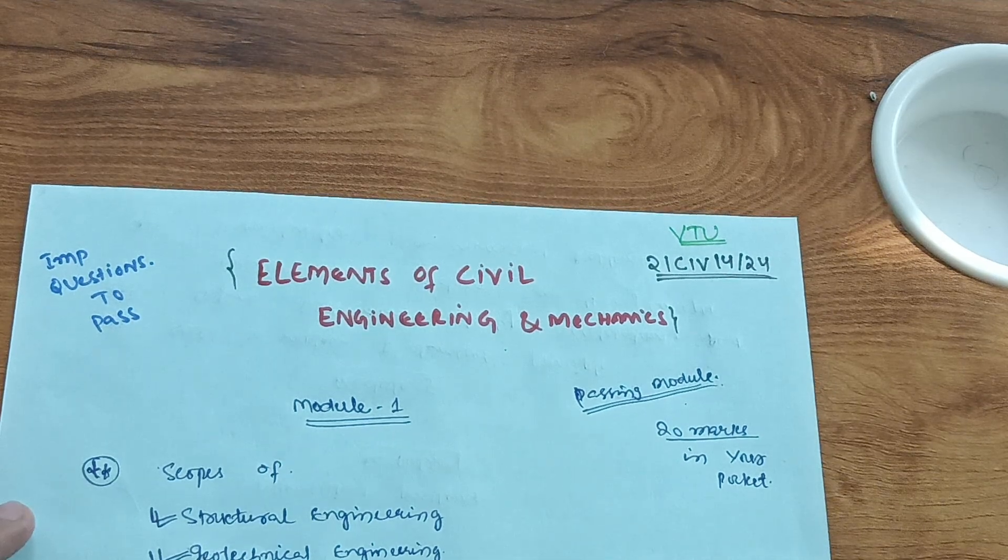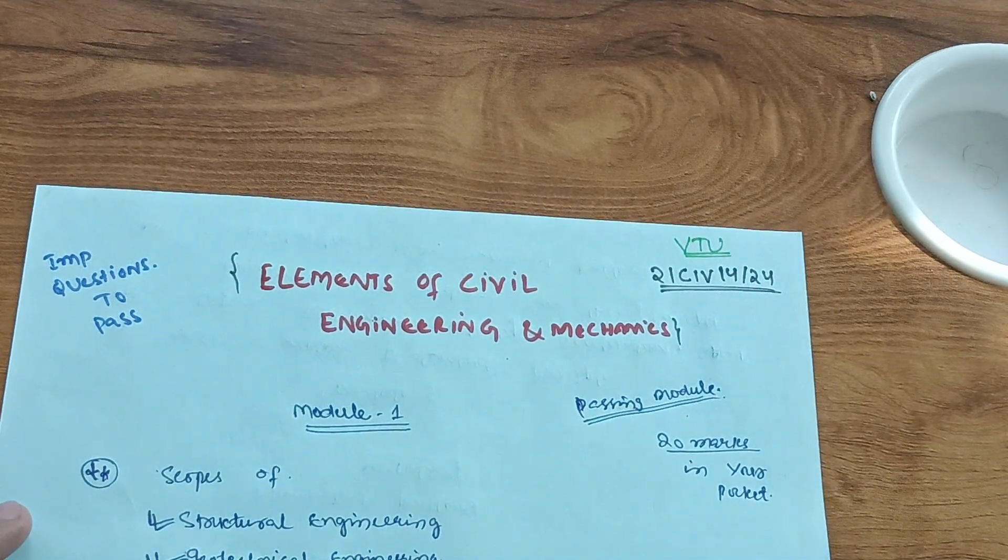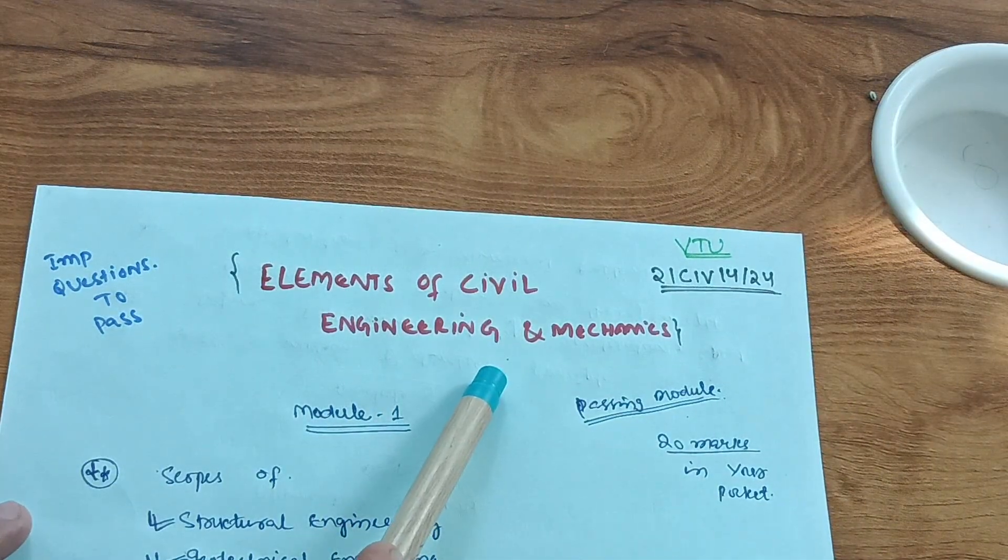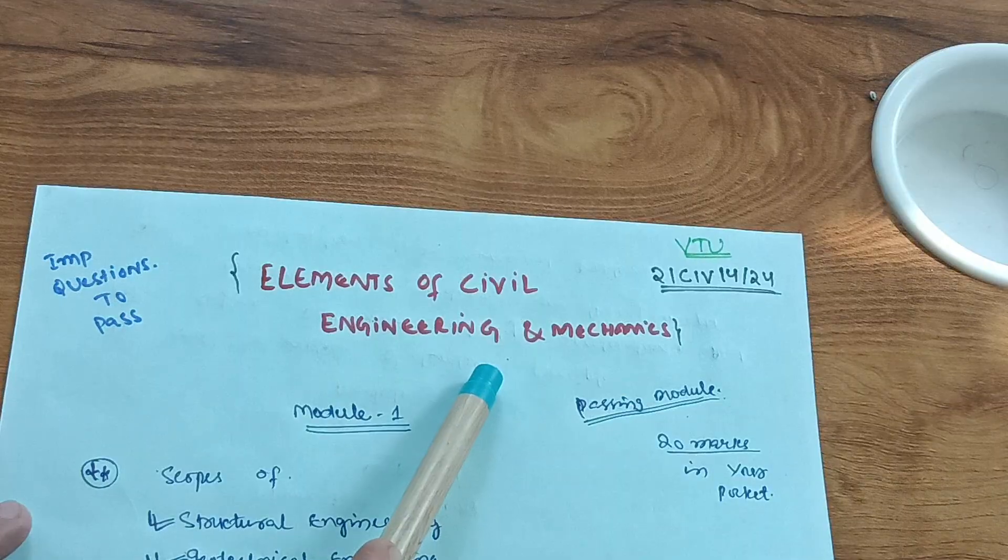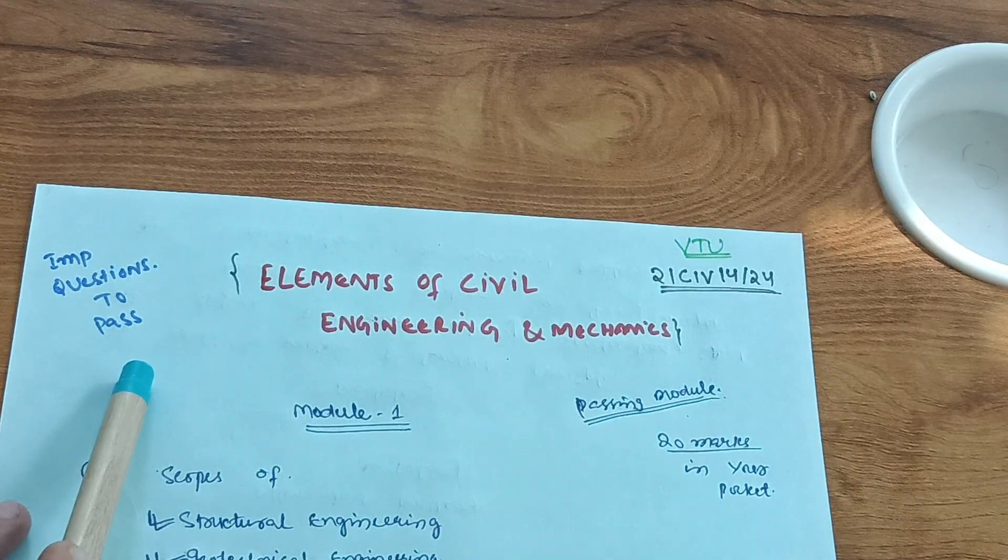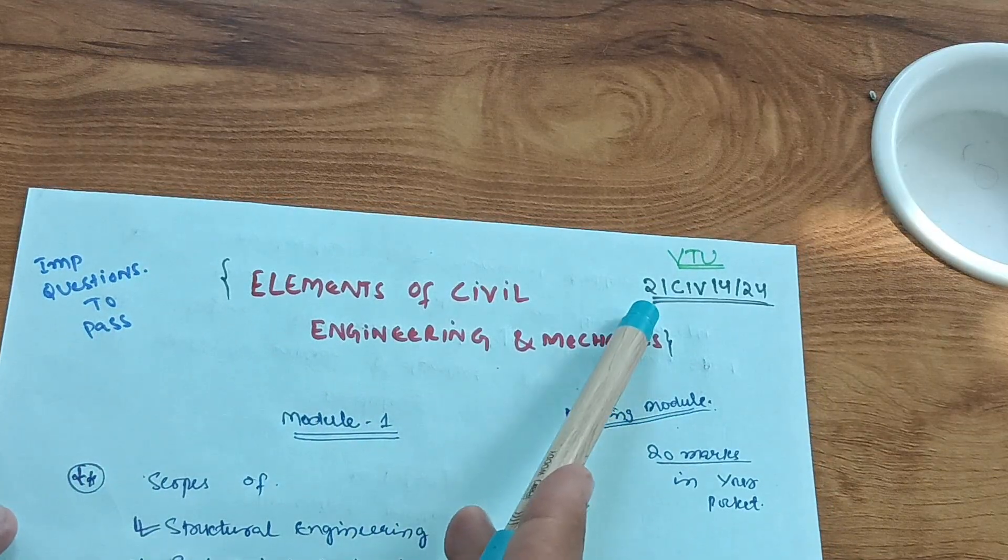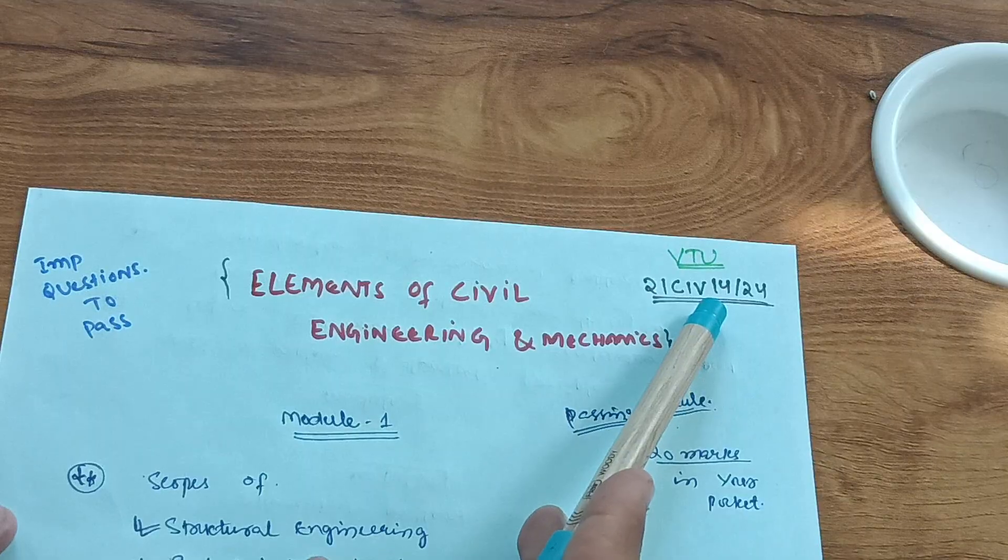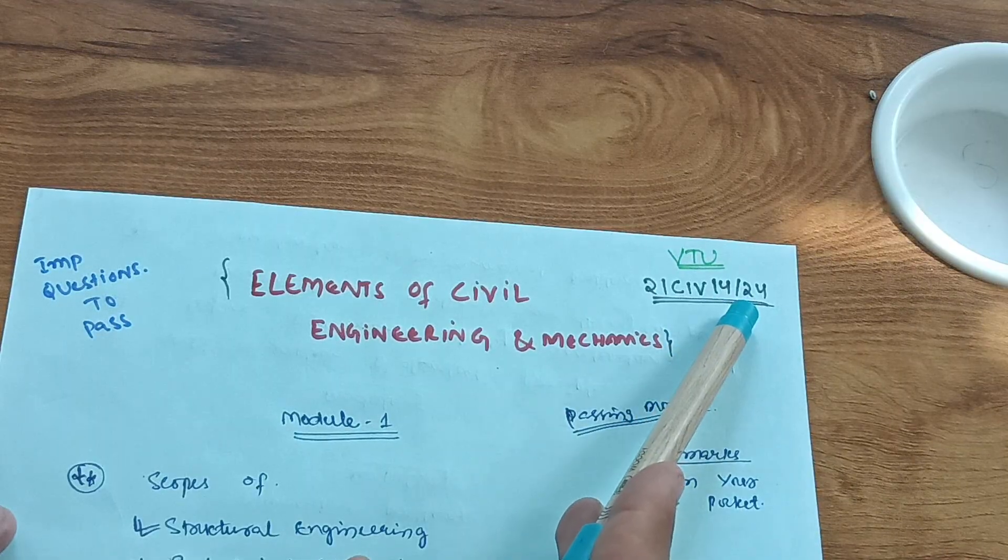Hello friends, welcome back again. This is another subject, Elements of Civil Engineering and Mechanics. In this video, I want to sort out some important questions to pass for the 21 scheme students. The subject code is 21 Civil 14, which is in first semester fourth subject and second semester fourth subject.